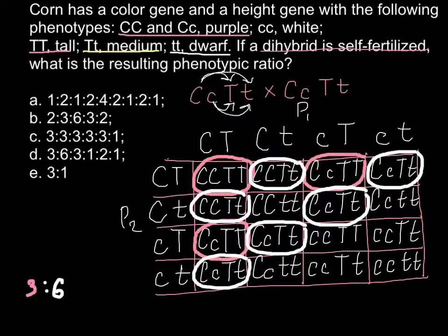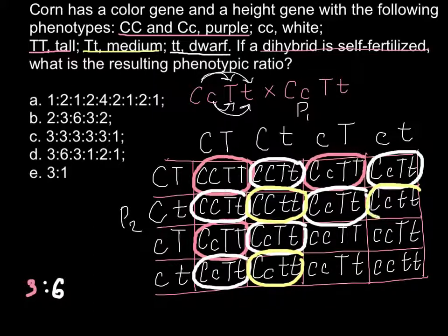Now let's change color. This is going to be purple and small (dwarf). And this is also purple and small. And this is also purple and small. So only three — we have 3 purple and small.